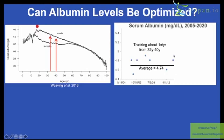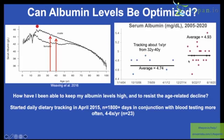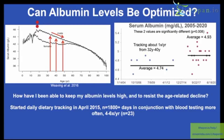In 2015, I started tracking more often — dietary tracking and blood testing four to six times a year. I now have 23 data points for albumin over the last five years. I've been able to increase my albumin levels from 4.74 to 4.93, and using a T-test these values are significantly different. I've been able to resist the age-related decline in albumin.